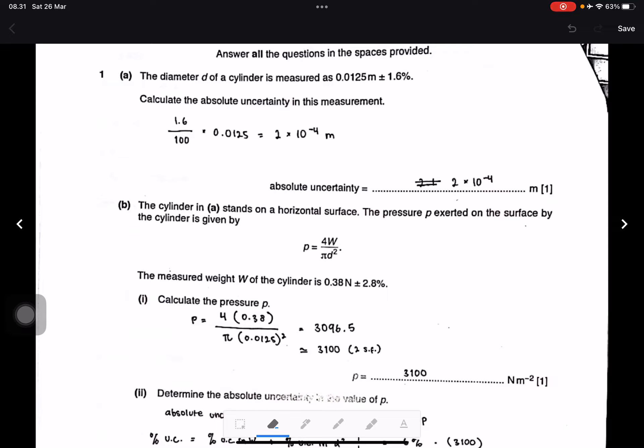Let me start from number one. Number one: the diameter D of a cylinder is measured as 0.0125 meters plus minus 1.6 percent. Calculate the absolute uncertainty in this measurement. This is 1.6 divided by 100, then times 0.0125 meters.